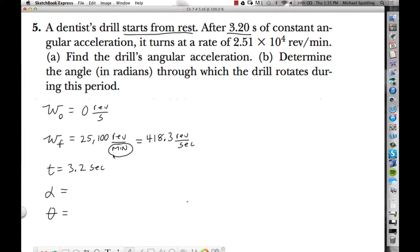So what I did is I converted revolutions per minute to revolutions per second. How do you convert revolutions per minute to revolutions per second? Divide by 60, right? Divide by 60 and you'll have it in revolutions per second.